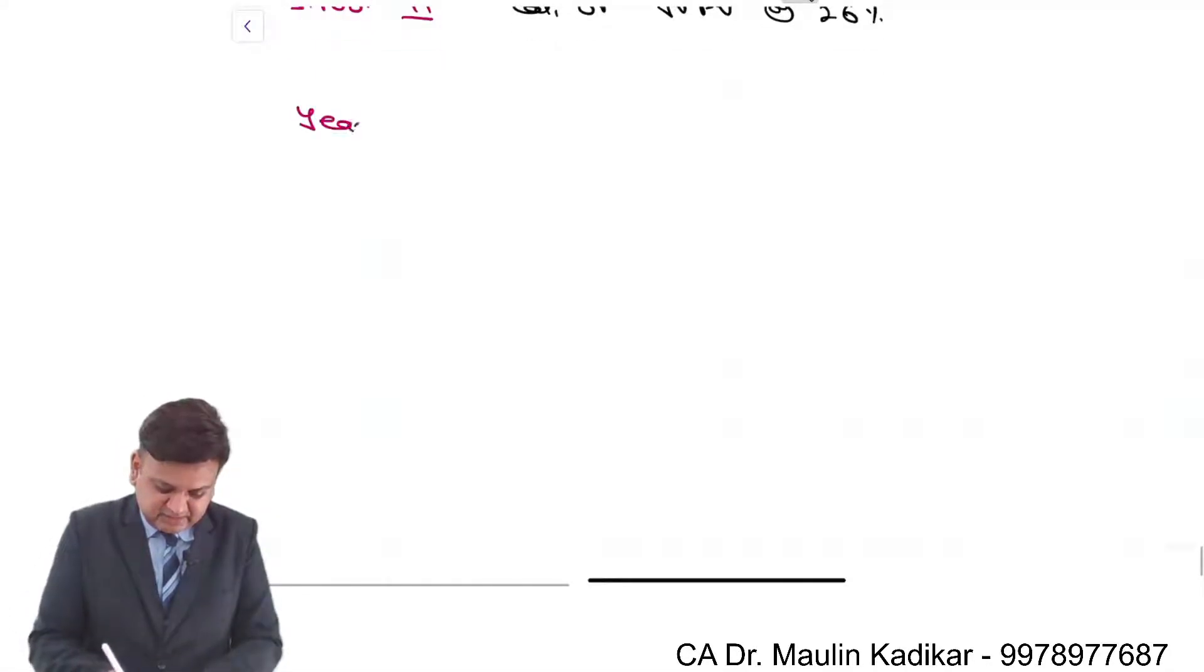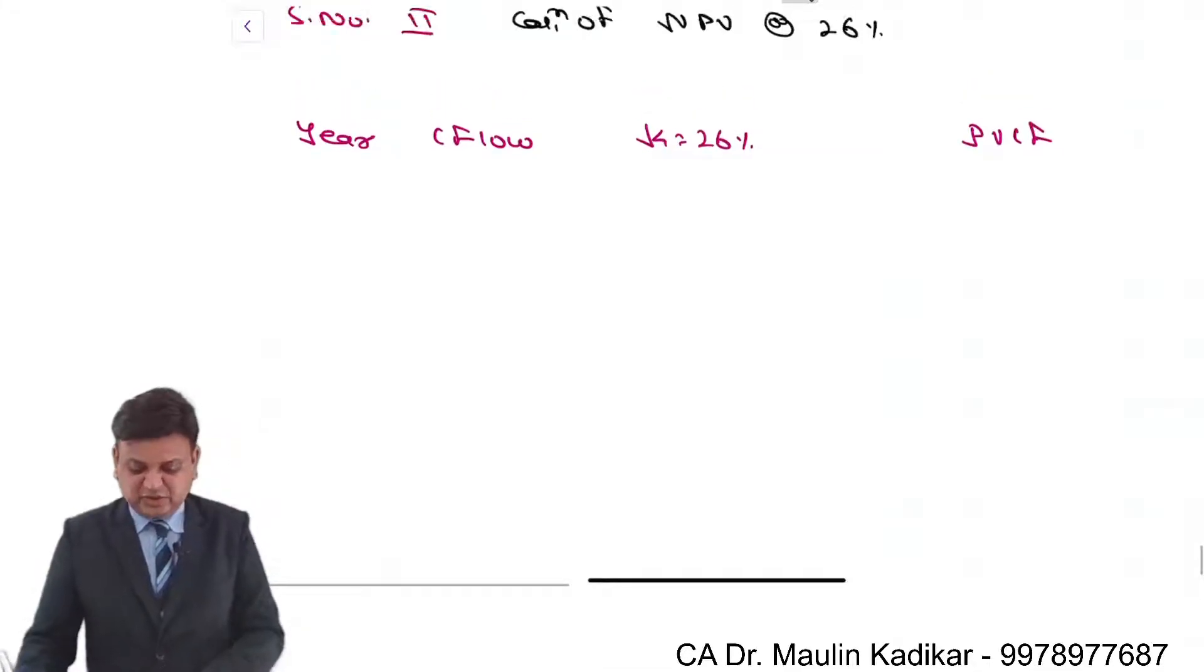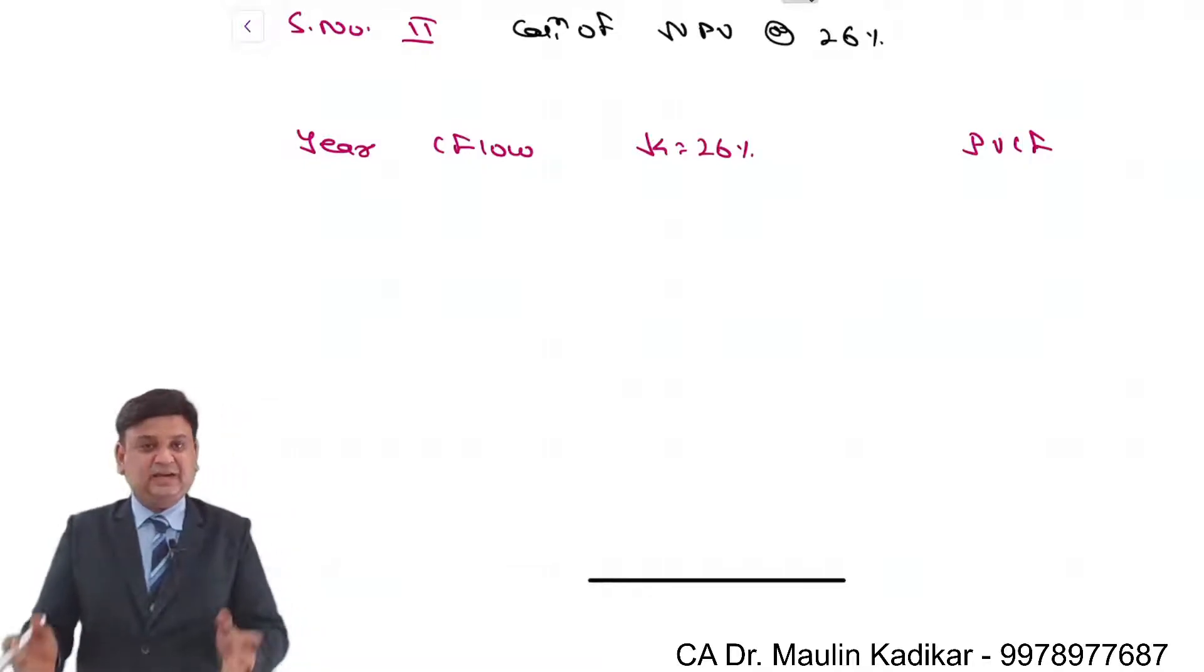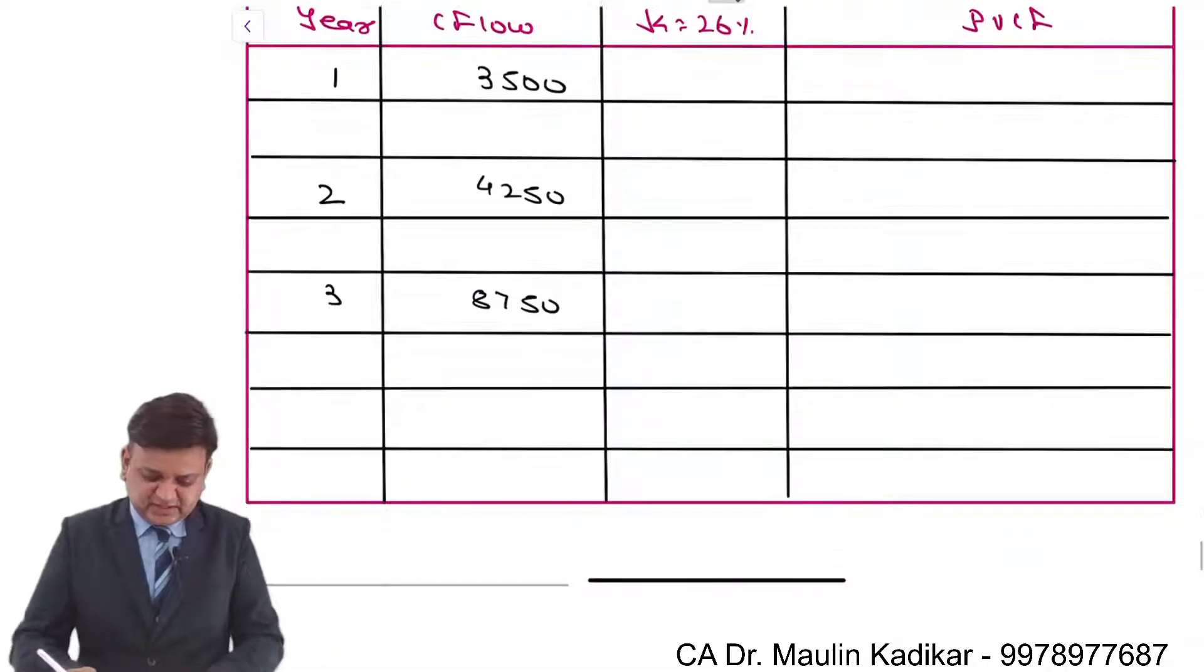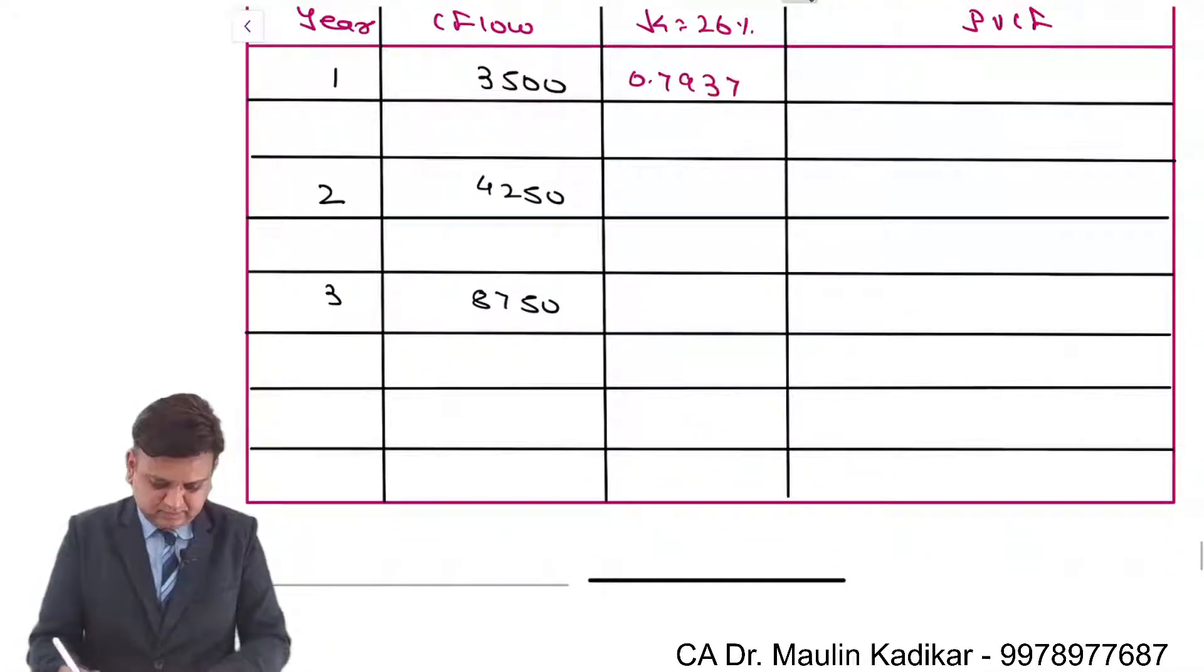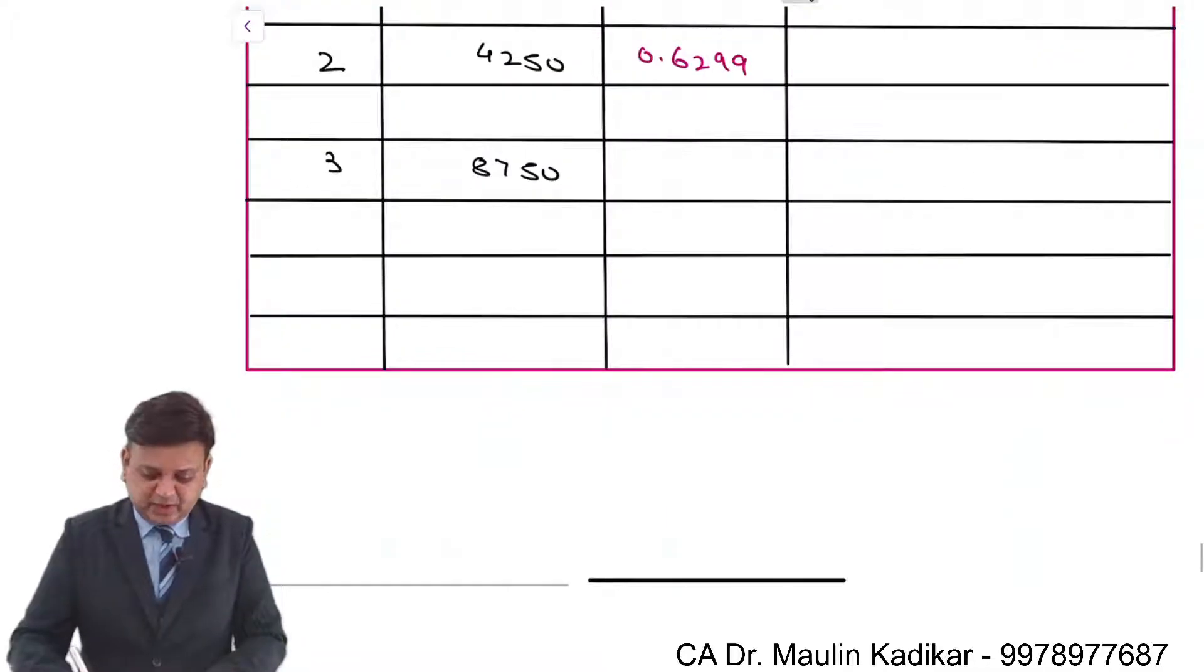So column number 1 is year, column number 2 is cash flow, third column is the discounting factor at 26% and the last column is the present value cash flow, and that is the way NPV will be calculated. Let us see that at 26% first year factor is 0.7937, second year factor is 0.629, third year factor is 0.4999.